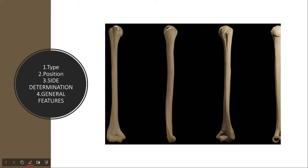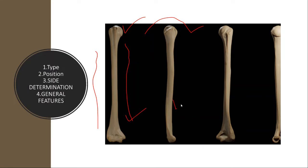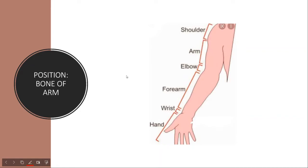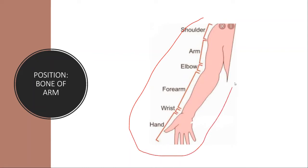First, let's see the humerus — its type and position. The humerus is located in the arm. This is your upper limb, and these are its different regions: the shoulder region, the arm, and below that is your forearm. The arm bone is the humerus. The forearm has two bones, which we will see next.